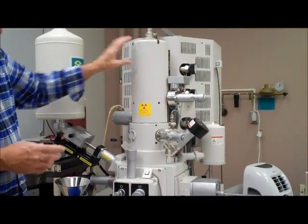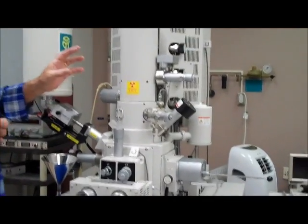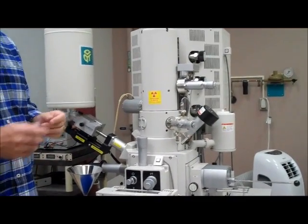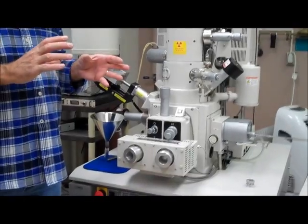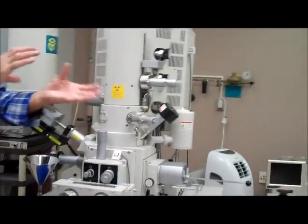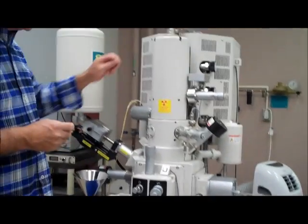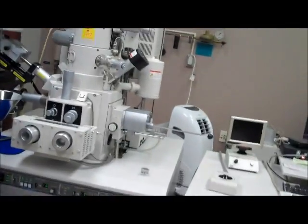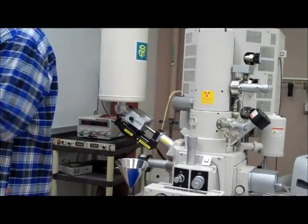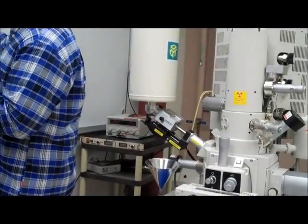At the top of the column is the electron gun, and so this is a special electron gun that's called a field emission gun, and it works a little differently than older microscopes or other microscopes. This one has an extremely sharp point on the end of a tip, it's called a tip.